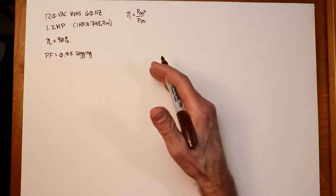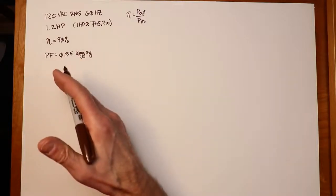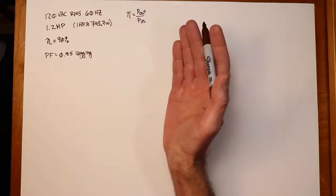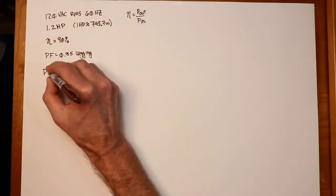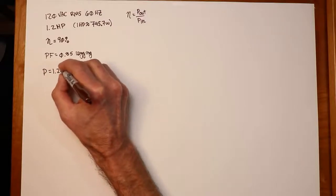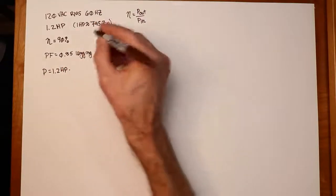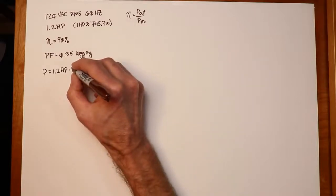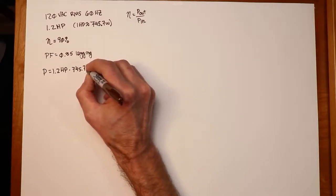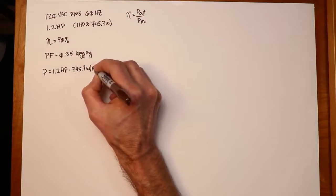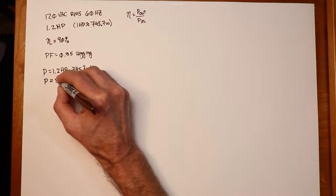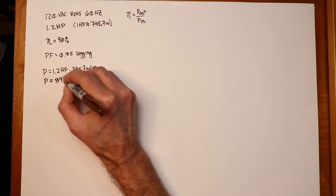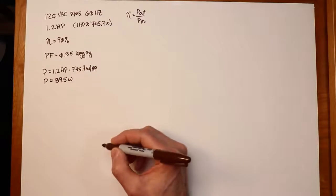Well, the very first thing we're going to have to do is turn our horsepower rating into a wattage value. So we're just going to use our conversion value here. So the power in watts is going to be 1.2 horsepower times 745.7 watts per horsepower. And that power is going to work out to approximately 895 watts.